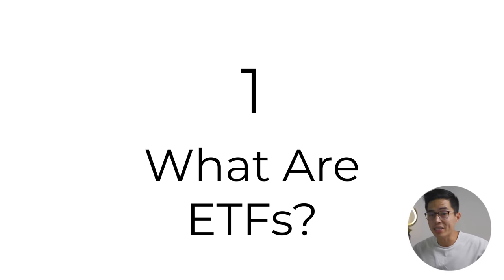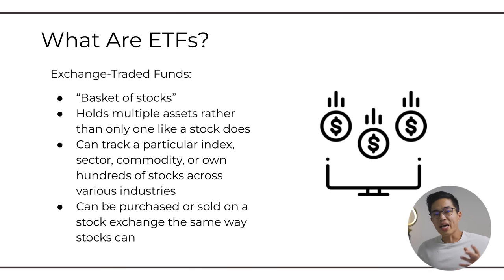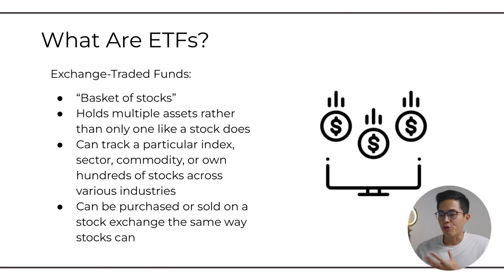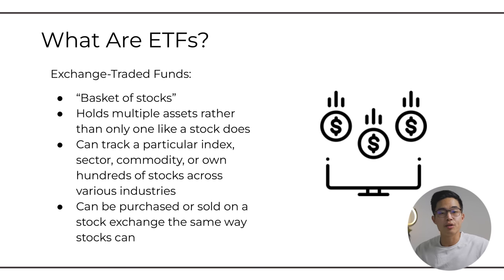The first thing I want to cover is what are ETFs? ETF stands for exchange traded funds — E is for exchange, T is for trading, F is for funds. It's basically a type of pooled investment security. How I like to think of it is it's a basket of stocks. By buying an ETF, you're essentially holding multiple assets rather than buying one particular stock and only being invested in that one company.